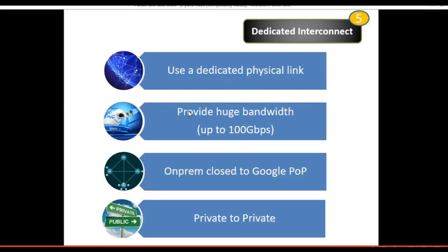This configuration allows you to access your private IP address from on-prem to your resources in Google, also under private IP address. Traffic to your Google Cloud VPC goes over this physical link and does not traverse the public internet. Just like Cloud VPN, the interconnect must be set up within your cloud project and requires cloud resources such as interconnect connection, VLAN attachment, and Cloud Router — therefore maintenance cost is required. Summary: uses a dedicated physical link, provides up to 100 Gbps bandwidth, requires proximity to a Google POP, and provides private-to-private access.